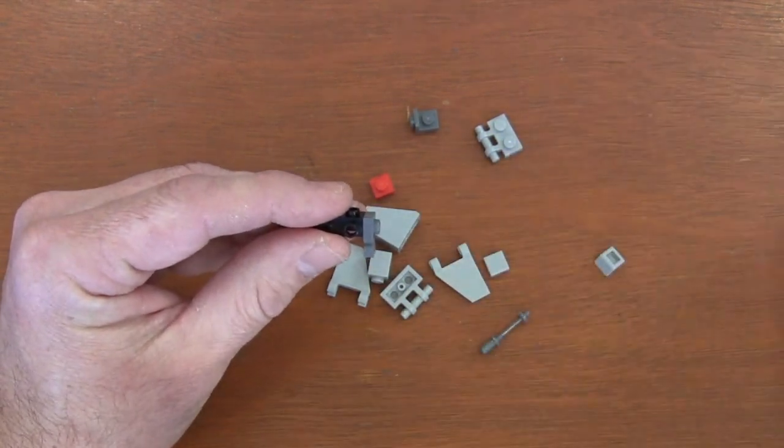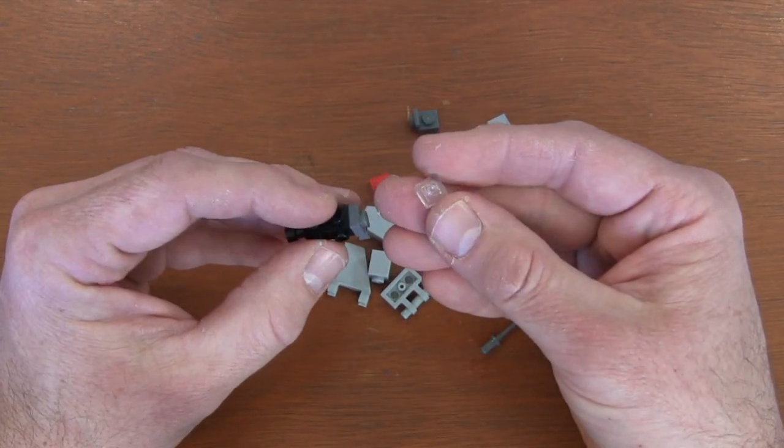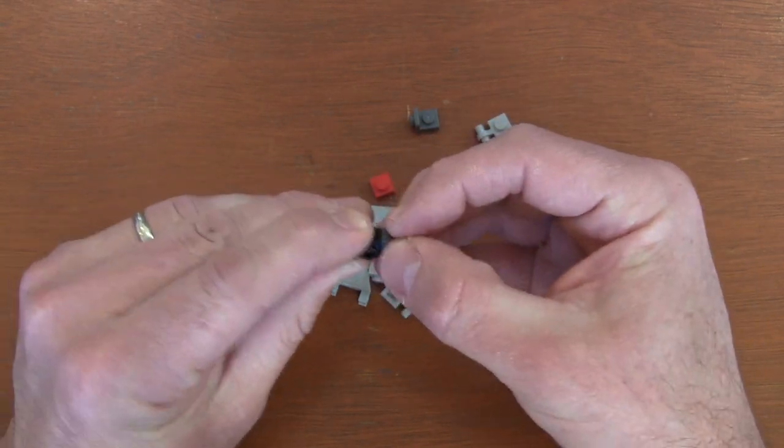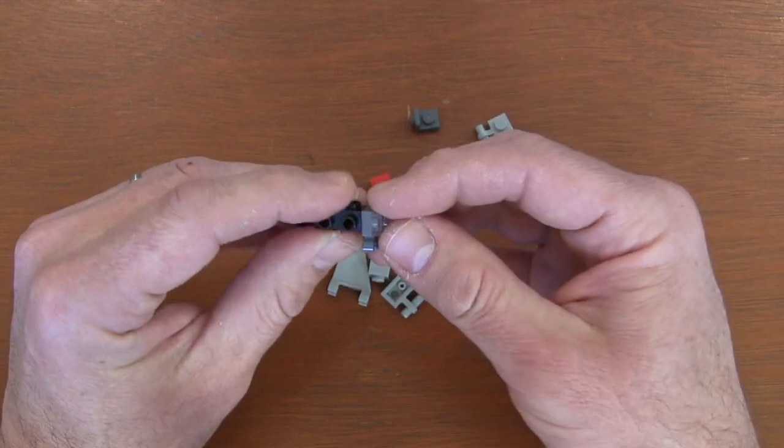On that plate piece with the clip, I'm going to grab a 1x1 translucent clear plate and put that onto my clip plate, so it kind of creates the glass canopy to the T-16 Skyhopper.